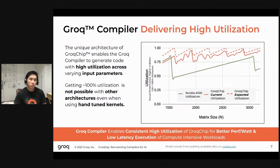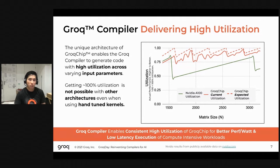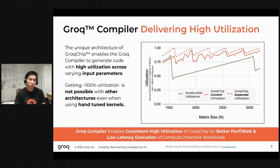To illustrate the benefits of the Groq compiler, here's a depiction of the compilation of various matrix multiplies and the overall utilization achieved on the Groq chip. This diagram shows three lines: the dotted line is the expected utilization we expect to achieve over time — our chip can actually achieve 100% utilization for certain matrix sizes. The solid orange line is what we're achieving today, which is relatively close to expected utilization, and we anticipate these lines will converge with further optimizations.